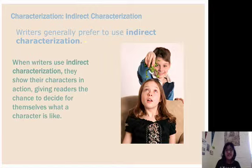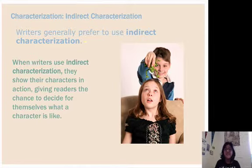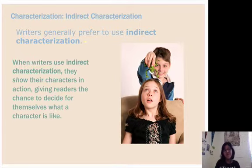In this image, we are seeing the character in action dangling a frog above probably a sibling, and the sibling is looking up in surprise. The author doesn't come out and say 'John was mean.' Rather, he shows John pulling a prank on his sister to allow you to infer whether you think John is funny and a jokester, or whether John is cruel and mean.